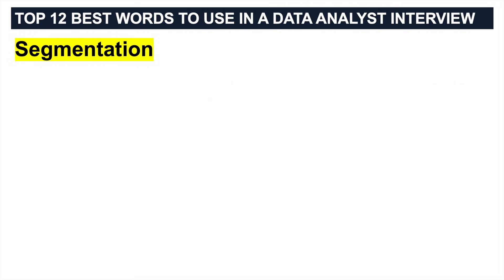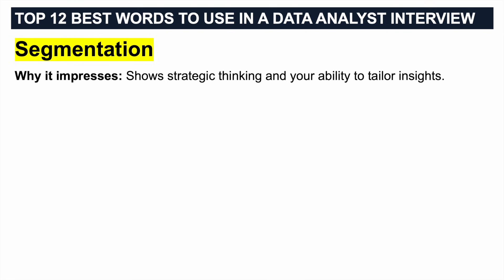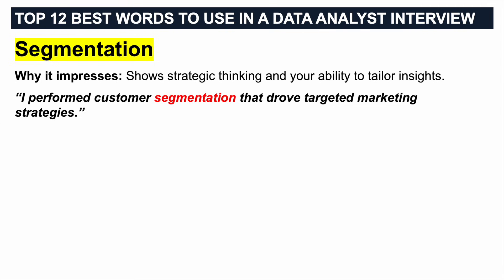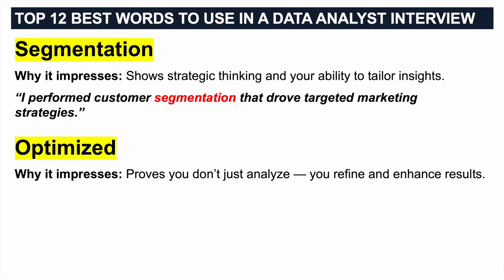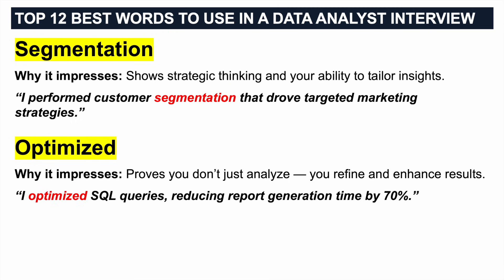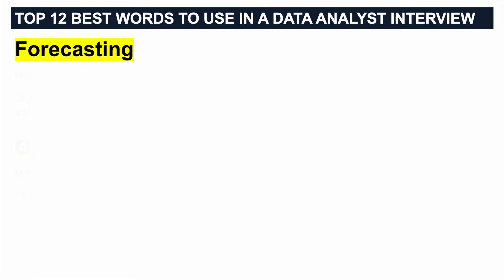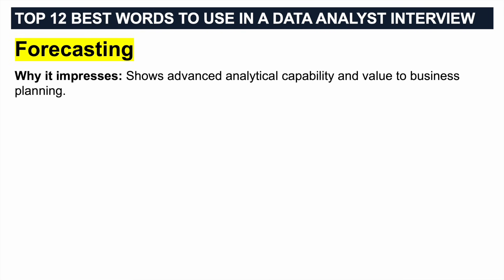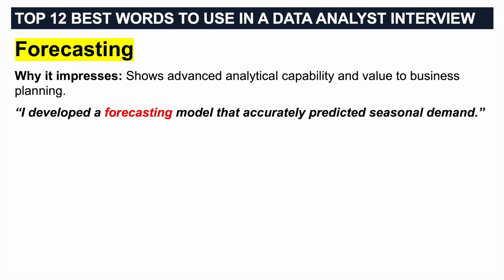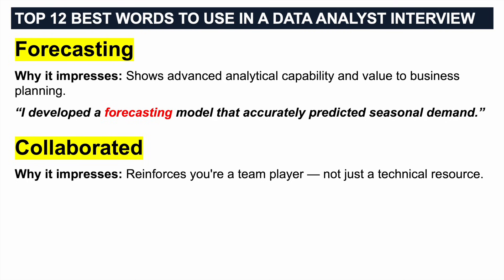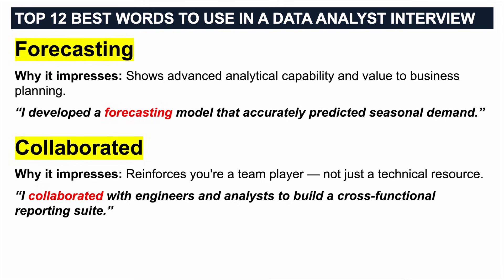Next word: SEGMENTATION. Why this impresses — it shows strategic thinking and your ability to tailor insights. You could say: 'I performed customer segmentation that drove targeted marketing strategies.' Next word: OPTIMIZED. Why this impresses — it proves that you don't just analyse, you refine and enhance results. You could say: 'I optimized SQL queries, reducing report generation time by 70%.' You can see how effective it is when you use percentages in your answers. FORECASTING — why this impresses: it shows advanced analytical capability and value to business planning. You could say: 'I developed a forecasting model that accurately predicted seasonal demand.' COLLABORATED is a great word — it impresses because it reinforces you are a team player, not just a technical resource. You could say: 'I collaborated with engineers and analysts to build a cross-functional reporting suite.'